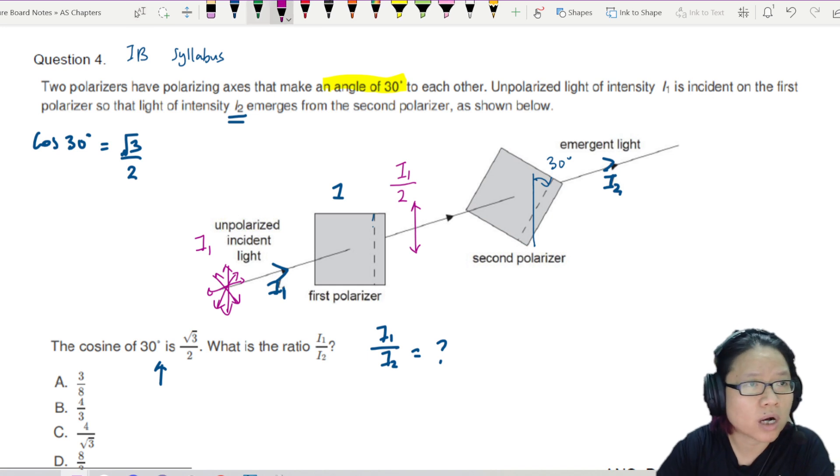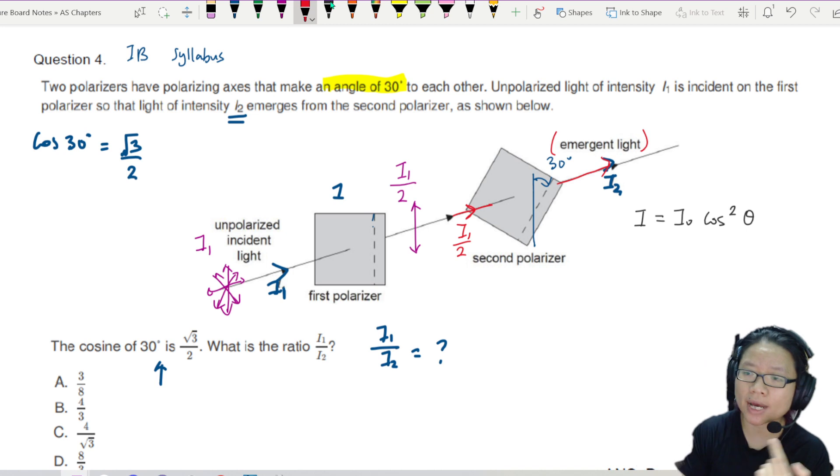So that means the light that is incident on polarizer number 2, the second polarizer here, this one is actually I1 over 2. And the one that comes out is I2. So if we are going to use Malus' law, I'll write down Malus' law first. I equals I0 cos square theta. But in this case, what is the emergent light, the one that is transmitted or exits the polarizer? This will be I2.